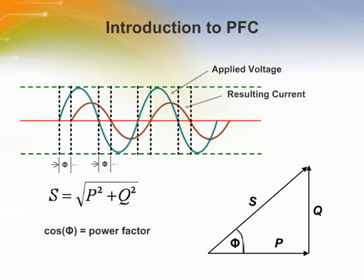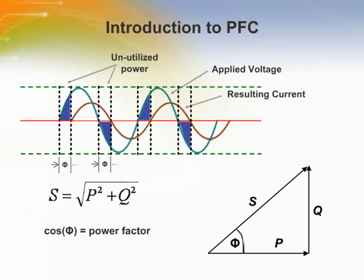The Power Factor is defined as the ratio between the real power and the apparent power in an AC circuit. The real power represents the net energy transferred to the load over one complete AC cycle, while the reactive power represents the fraction that is only temporarily stored by the load. The real power is measured and monitored for power consumption, associated with producing mechanical work and heating.